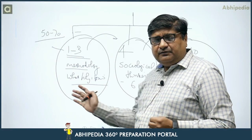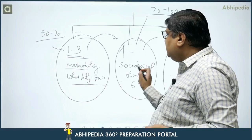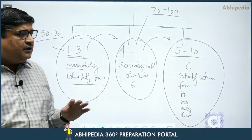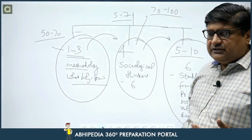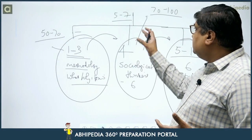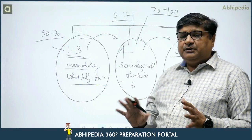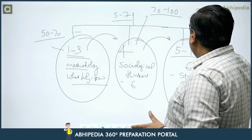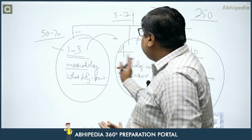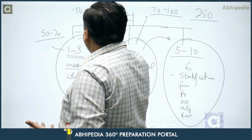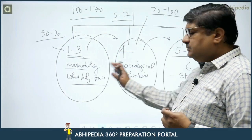Around 50 to 70 marks of questions appear from the first 3 chapters. The thinkers chapter alone accounts for about 70 to 100 marks, with 5 to 7 questions of 10 or 20 marks each year. That is roughly 100 marks out of 250 total — accounting for about 40% of your paper. If you take these two sections together, that is 150 to 170 marks, around 60 to 70% of paper 1.